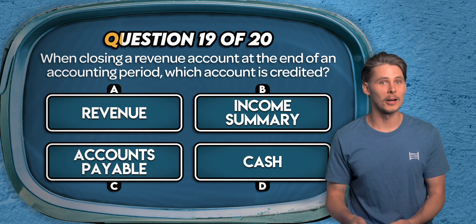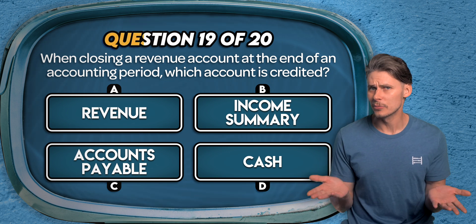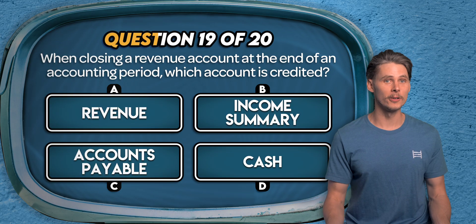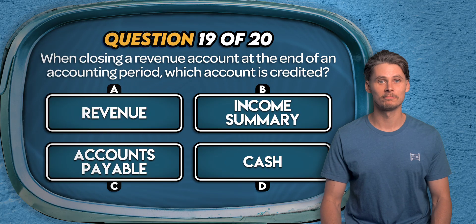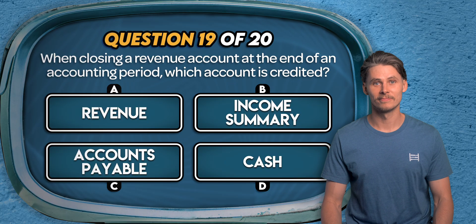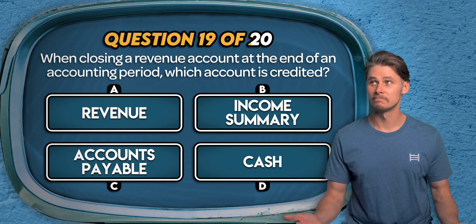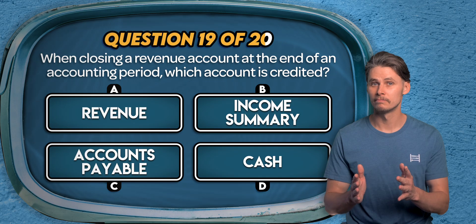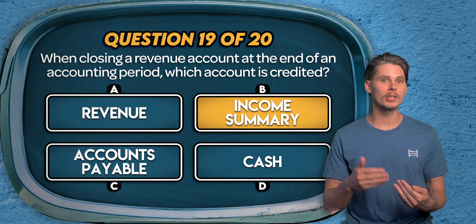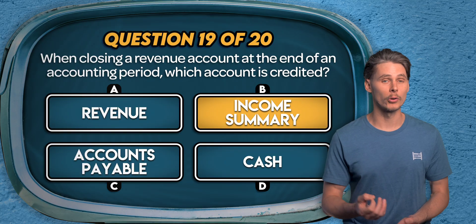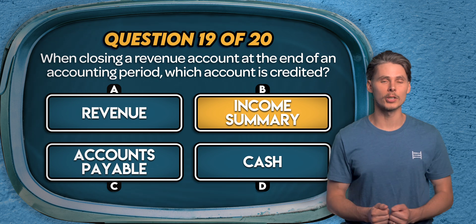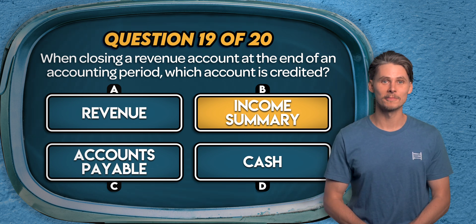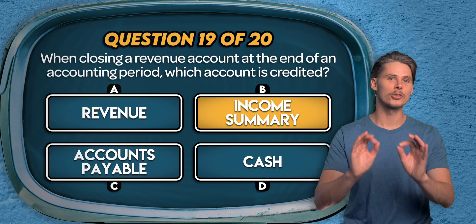Question 19. When closing a revenue account at the end of an accounting period, which account is credited? Is it revenue, the income summary account, accounts payable, or cash? The answer is B — the income summary account. When posting closing entries, we debit revenue accounts to clear them to zero. Their balances are transferred to the income summary account, which is credited to increase it. This account is then closed to retained earnings.